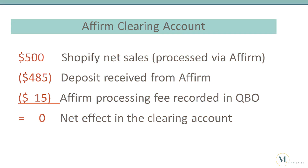In this example, we have $500 of net sales from Shopify processed using Affirm as the payment processor. A couple of days later, a $485 deposit is received from Affirm, and the $15 fee is recorded in QuickBooks. The net effect of these transactions in the Affirm clearing account is zero.